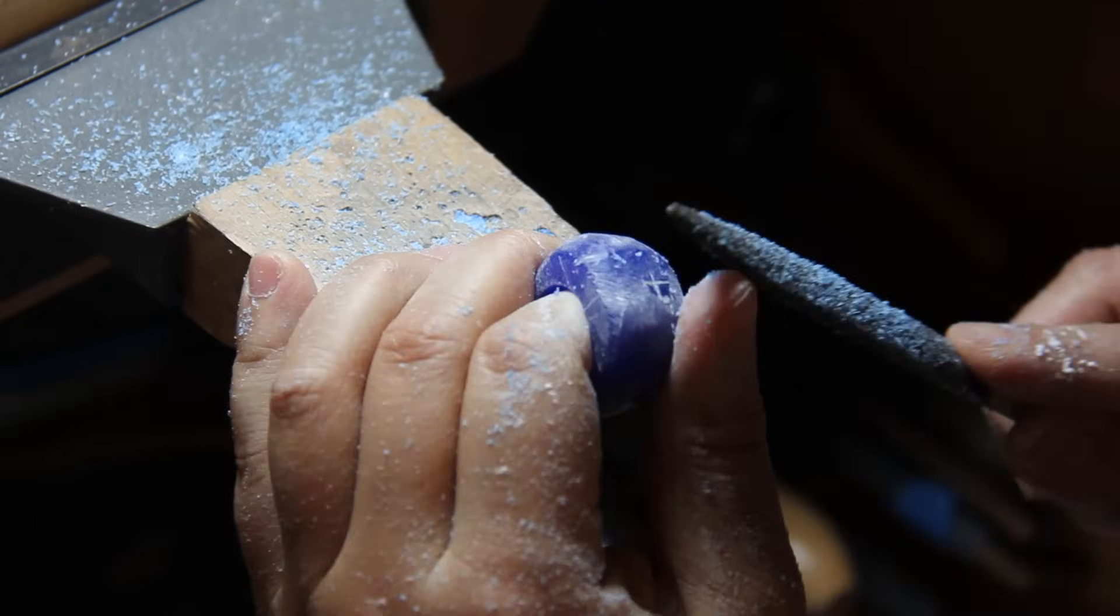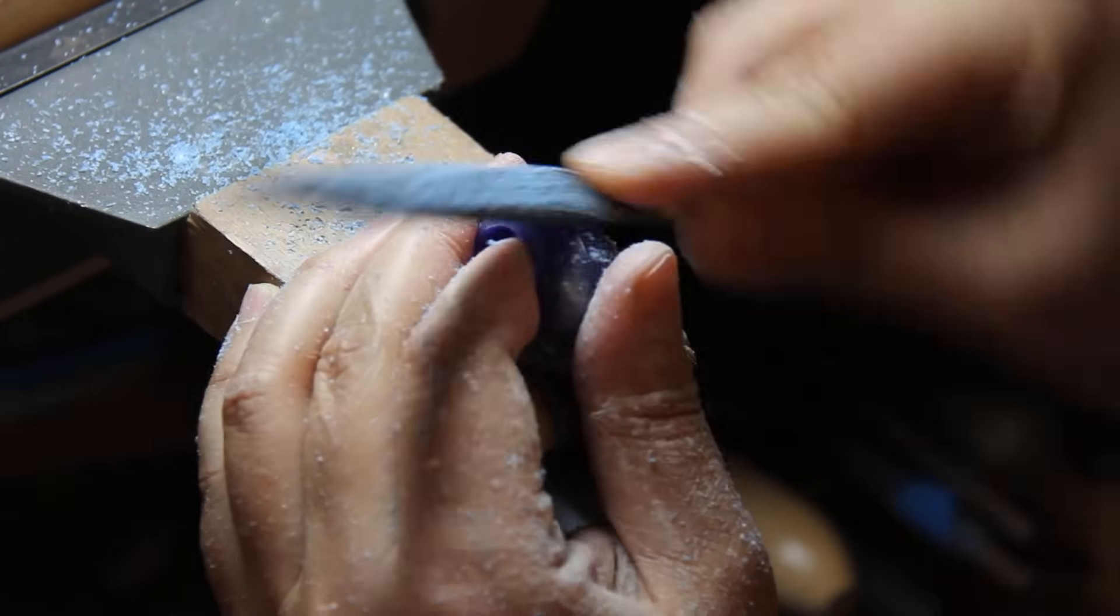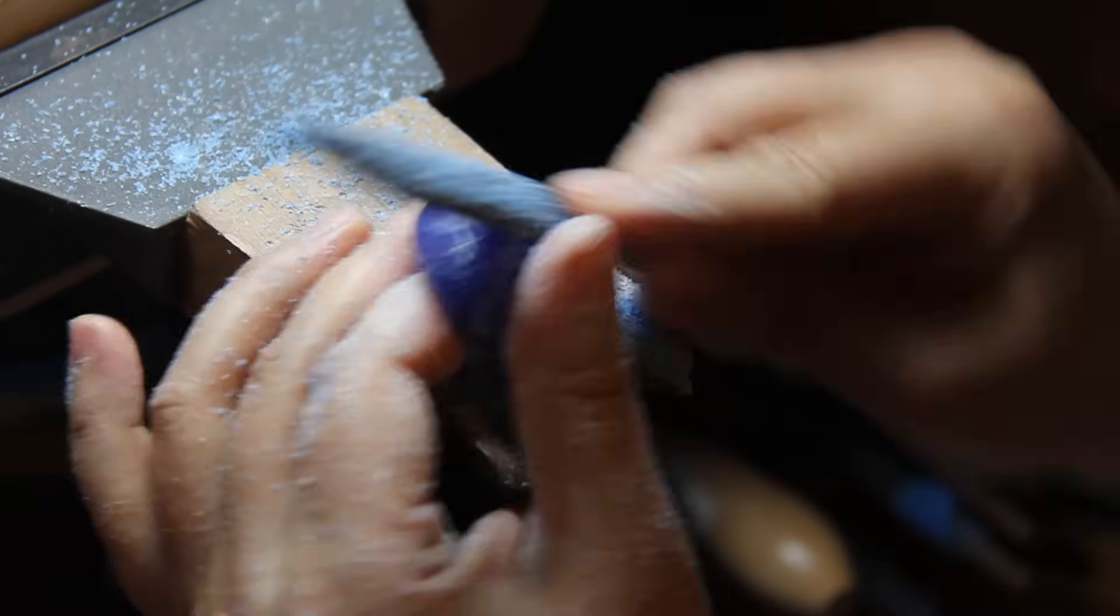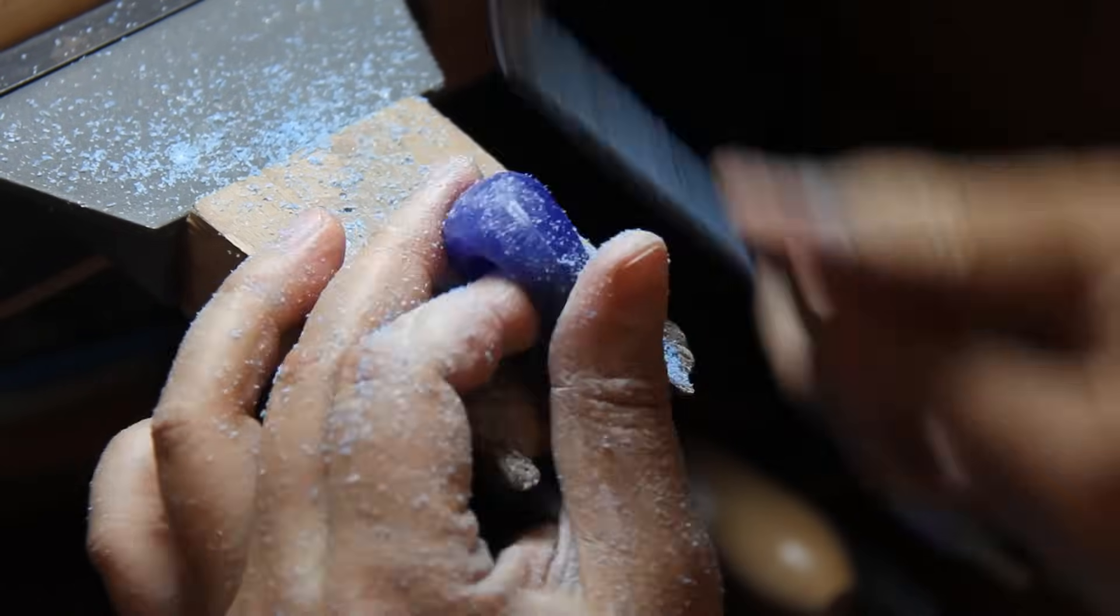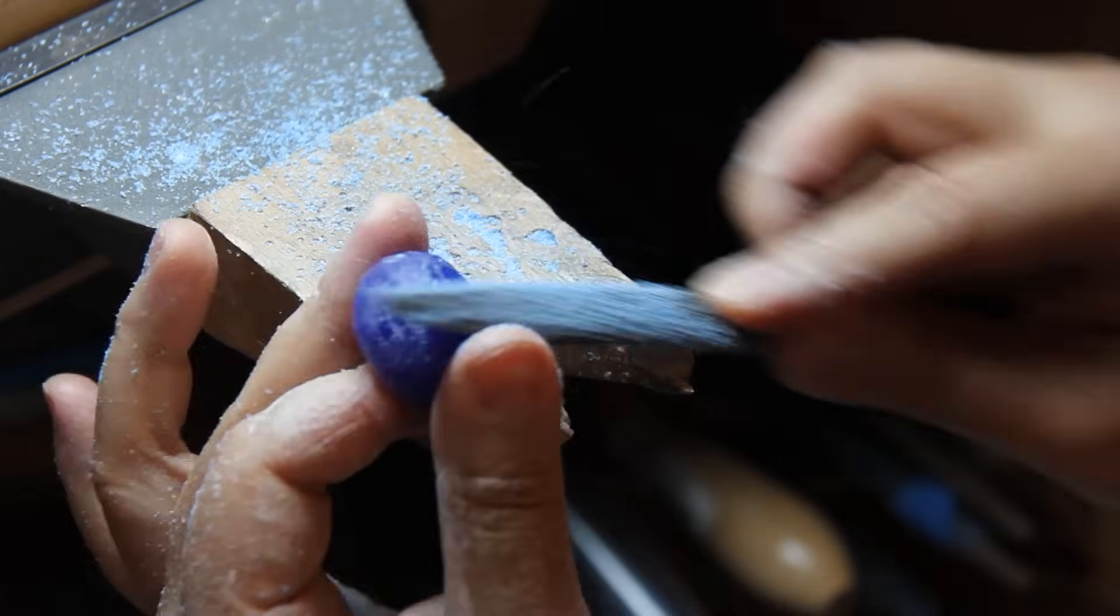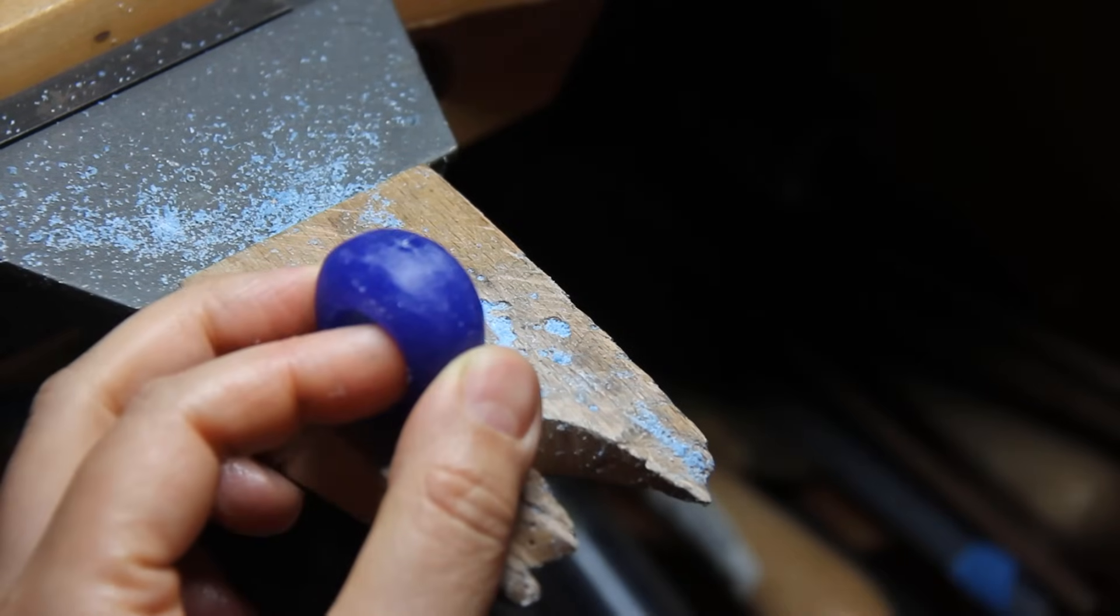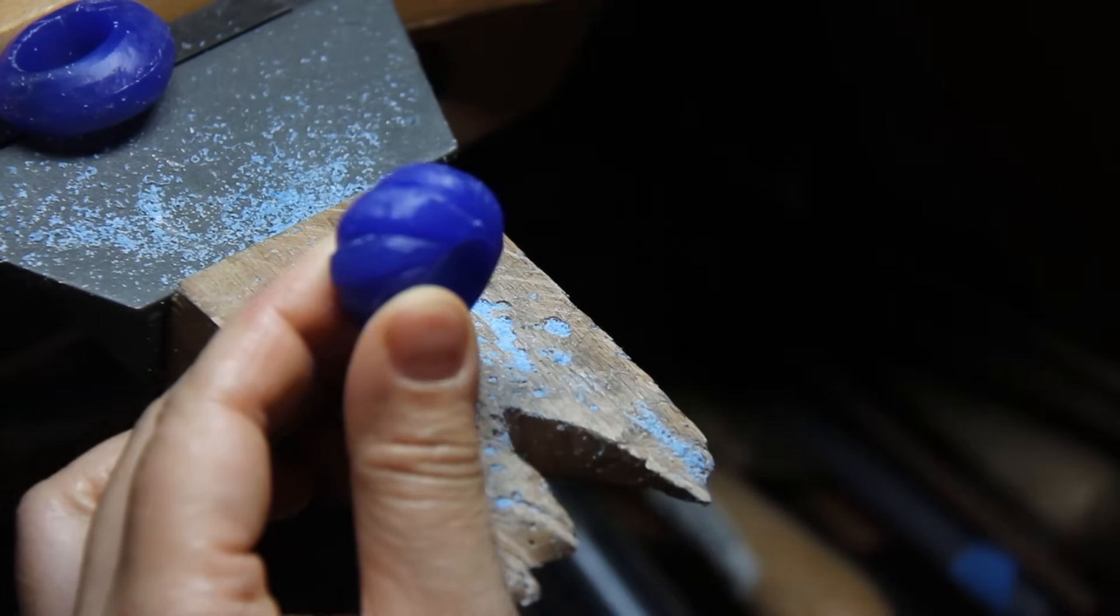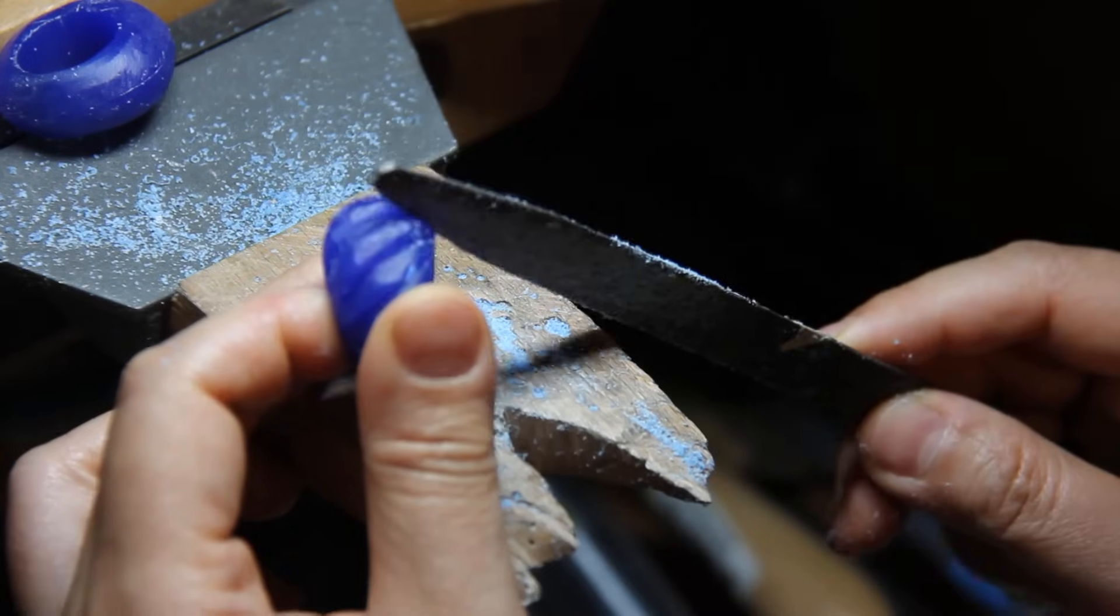When you file, try to file following the dome. So try to move your file with that round action or curve action. So this is a fast-forward to show you how I file this wax. Now this is almost done. We can do some variation at this point. Maybe you want to carve some groove in there. What you can do is you can use your wax file, and mark some line and carve the groove, so you can get some variation.